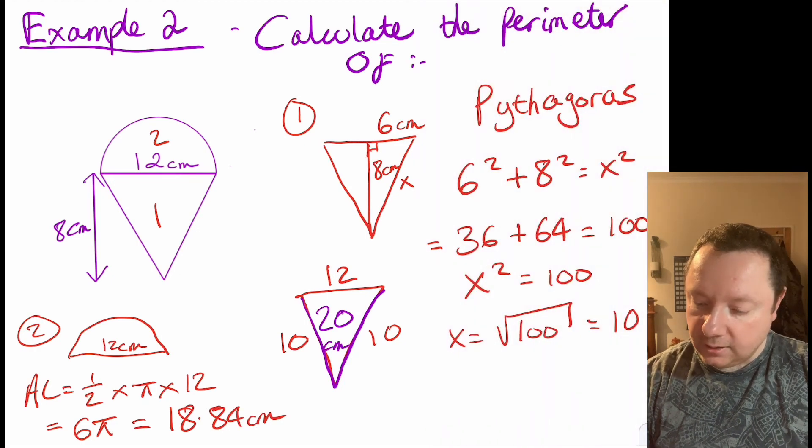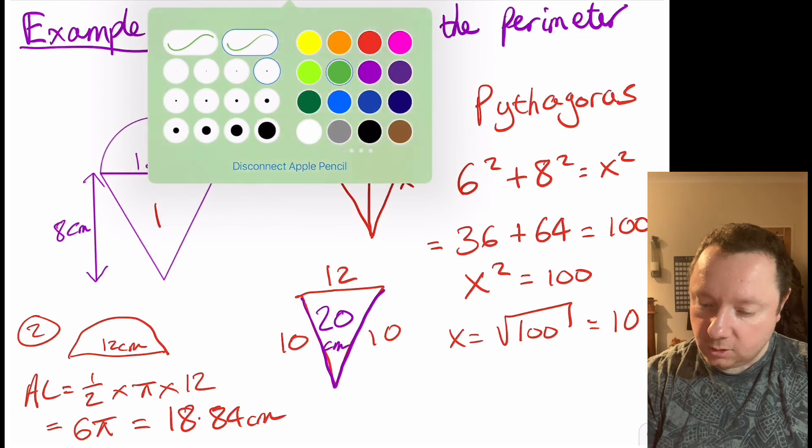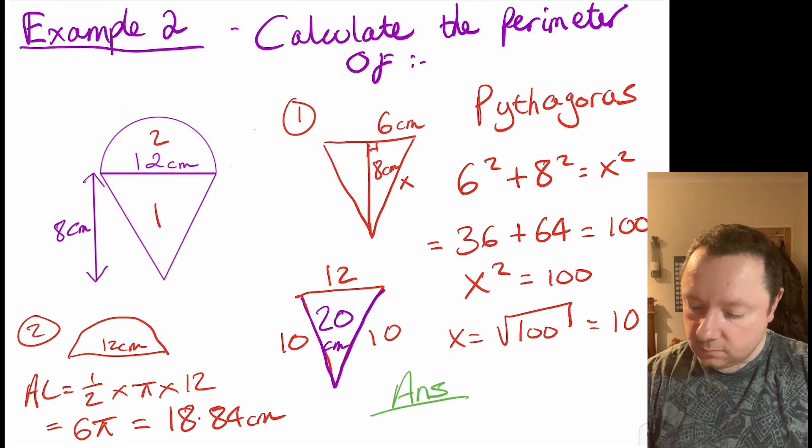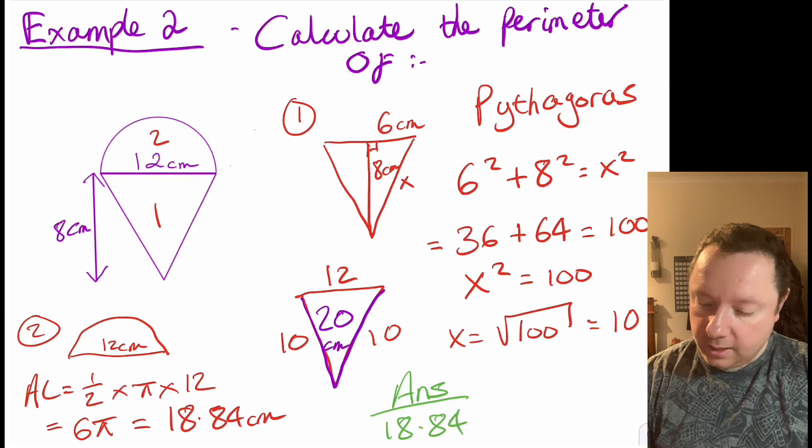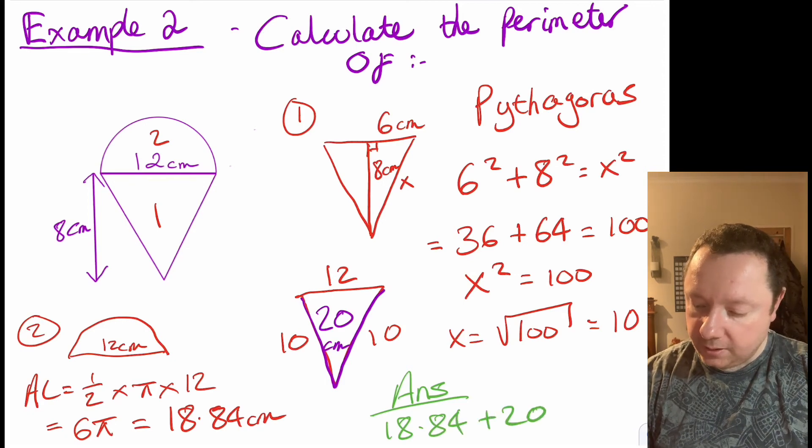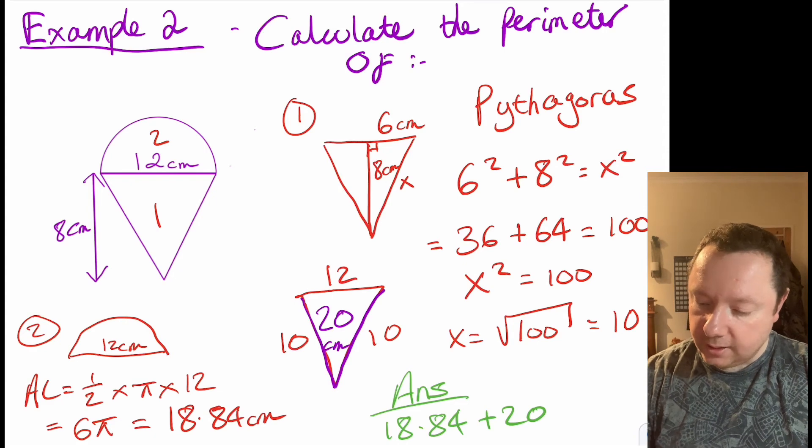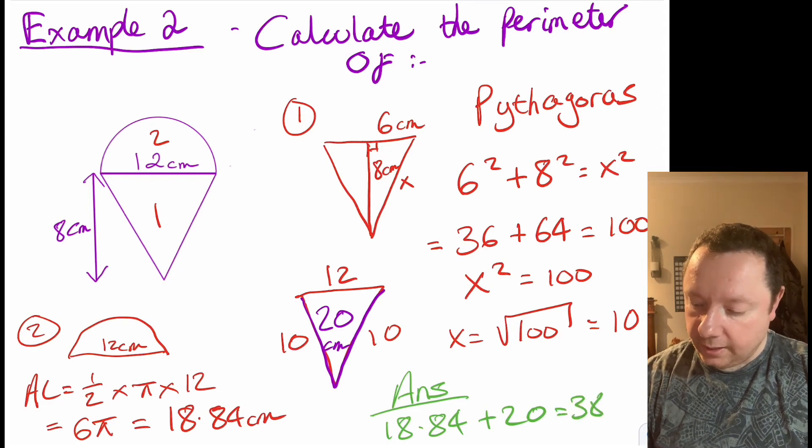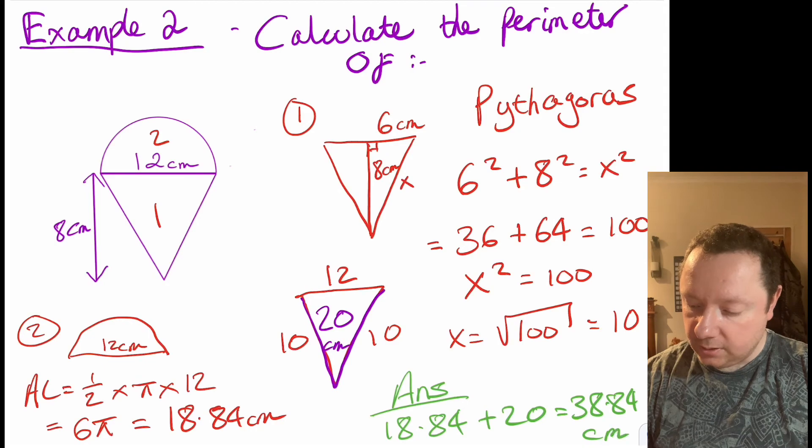So our final answer, which I'll do in green, is 18.84 for the arc length plus the 20 centimetres for the two straight sides, which is 38.84 centimetres.